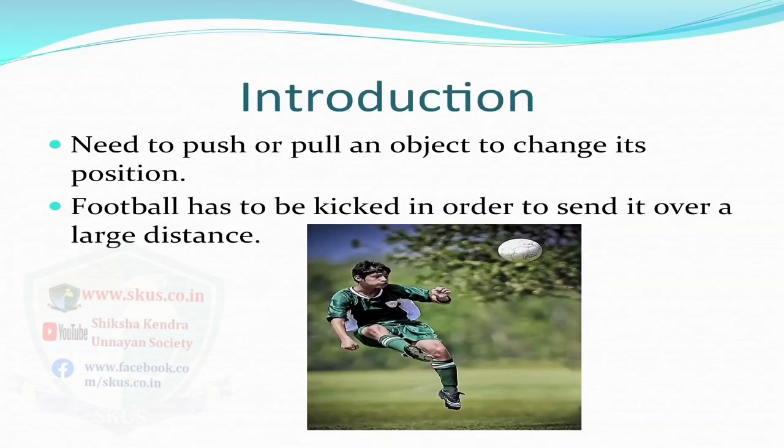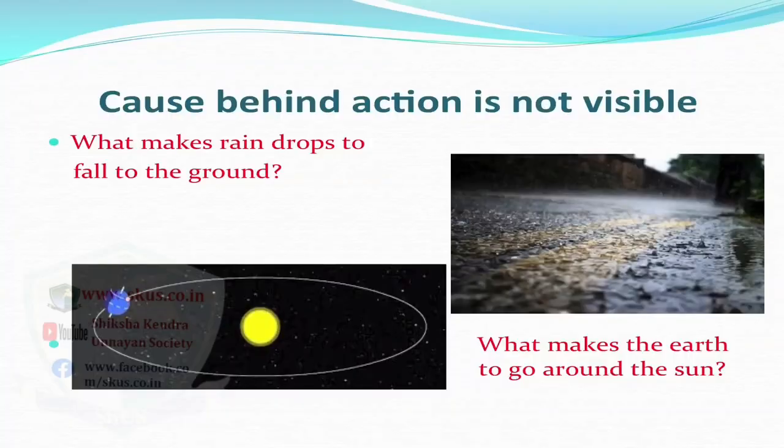Football has to be kicked in order to send it over a large distance. Muscular activity is involved in all these actions and its effect is quite visible. However, there are many situations where the cause behind an action is not visible. For example, what makes raindrops to fall to the ground? What makes the earth to go around the sun? In this lesson, you will learn the basic laws of motion and discover that force causes motion.